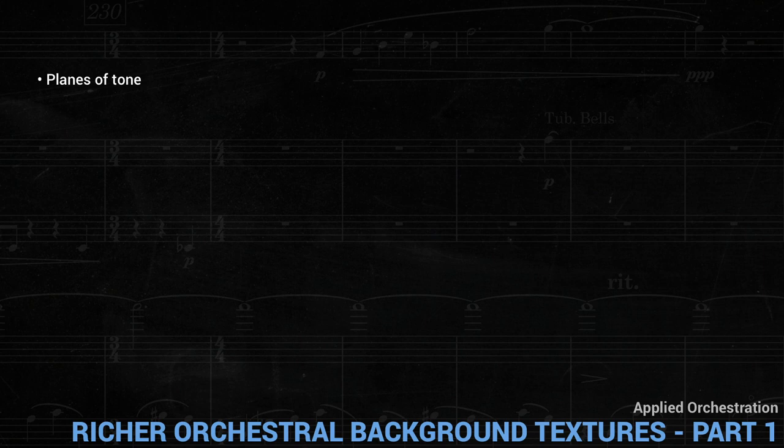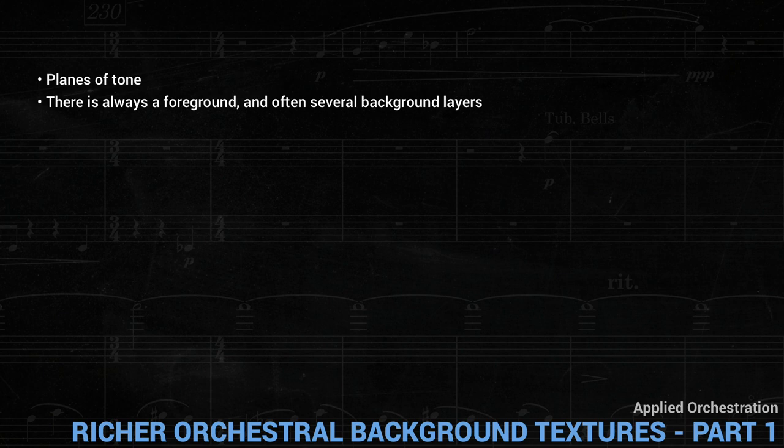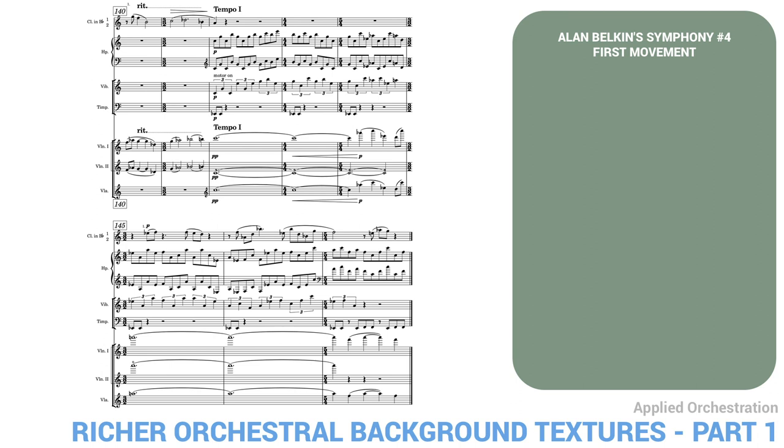In lesson four, we looked at the idea of planes of tone, a central concept in orchestration. In particular, we mentioned that all the elements in orchestration aren't equal. There's always a foreground, and often several background layers. One kind of background layer that's particularly rich is what I call orchestral movement. Usually this acts as an accompaniment to the foreground.